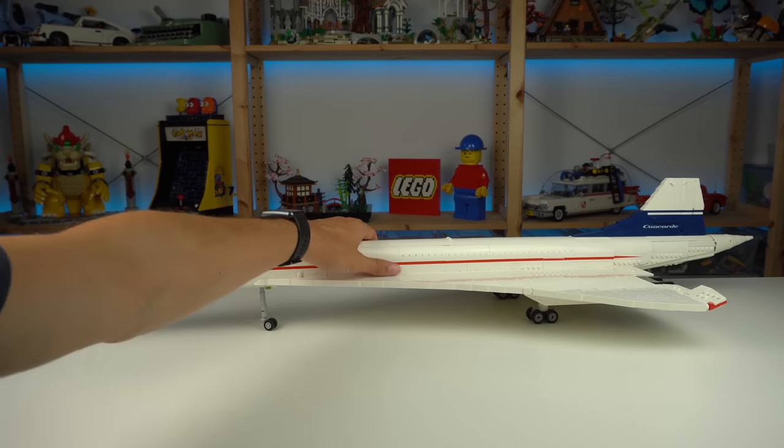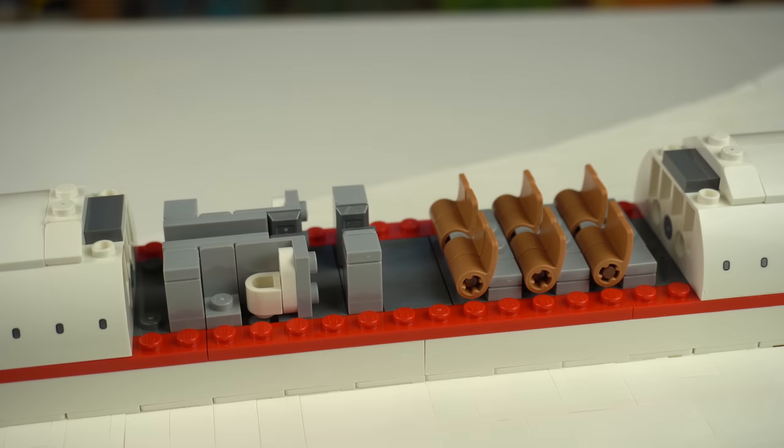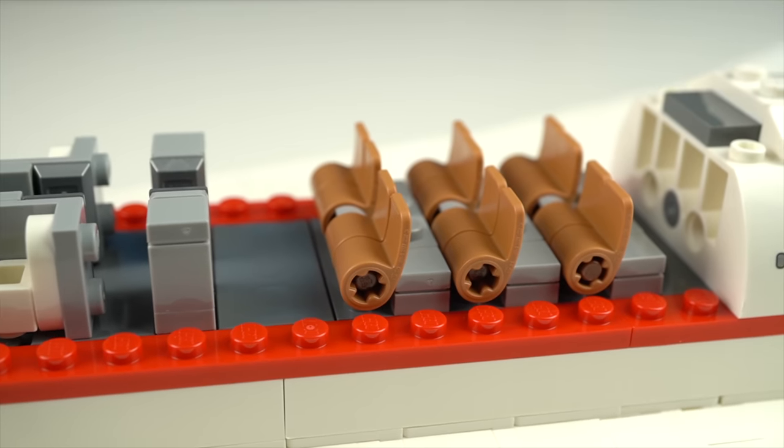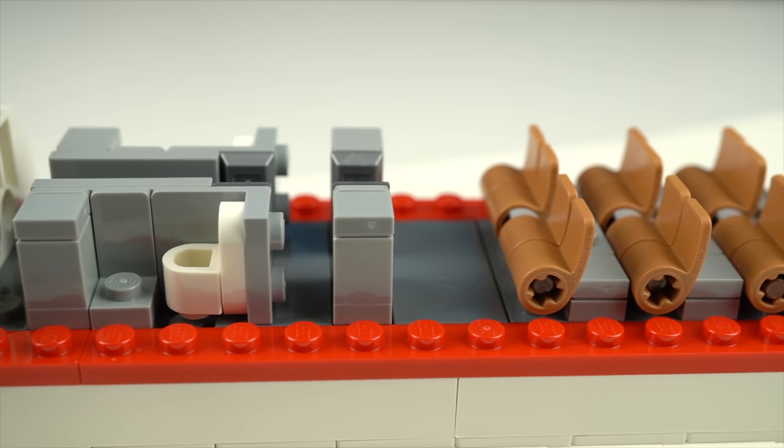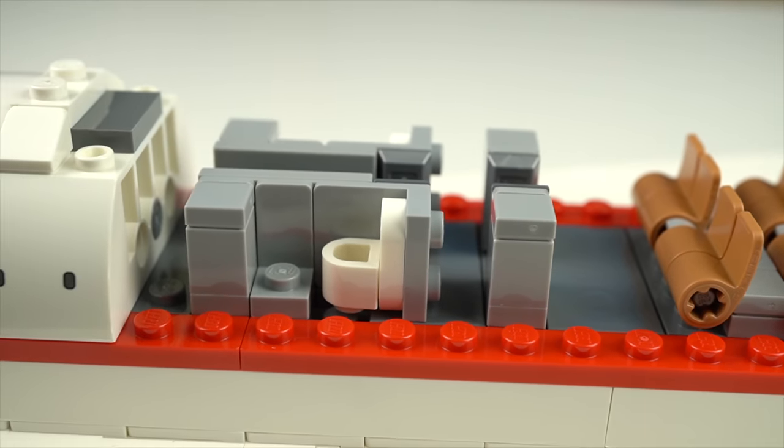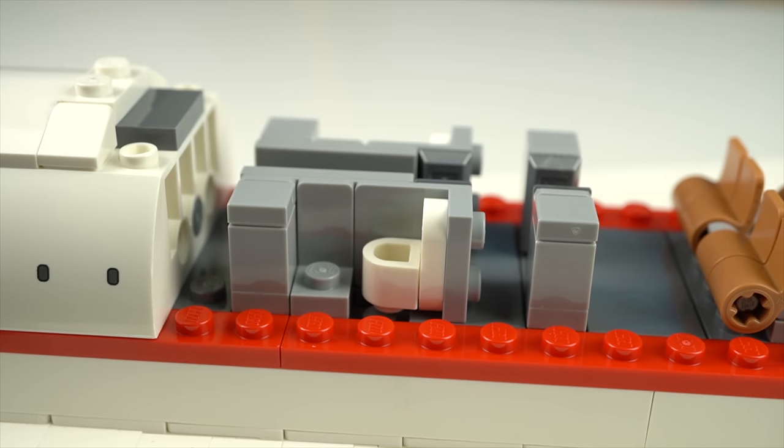In the midst of all of this a section of the cabin can be lifted giving us a neat look at some interior details like the seating made out of a LEGO Technic element or the toilets made with some very clever piece usage and building techniques.